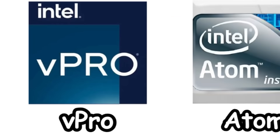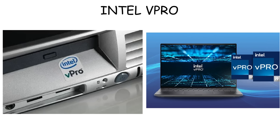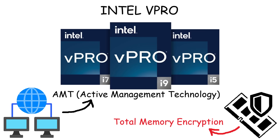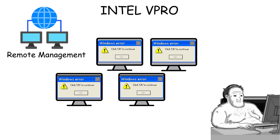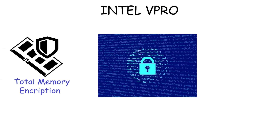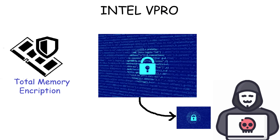Intel vPro is a special variant of the Intel Core series for business. You'll often see vPro versions of Core i5, i7, or i9 in office or enterprise laptops. What makes vPro special is it has Intel's Active Management Technology and Total Memory Encryption feature. AMT is a remote management feature where IT admins can update, control, or lock many computers remotely so they don't have to fix them one by one. Total Memory Encryption means it can encrypt your login credentials, encryption keys, and other text-based files stored in memory, so if somebody tries to steal your data, it will become scrambled and unreadable.